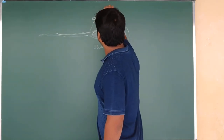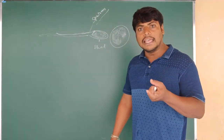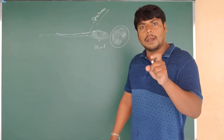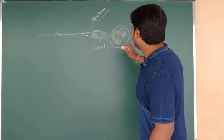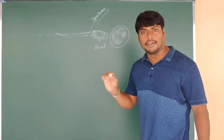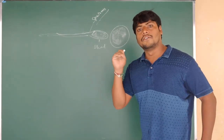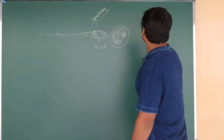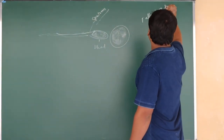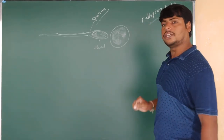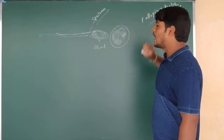These sperm cells, which are released or deposited in the female body, travel through the vagina and reach the fallopian tube, also called the oviduct.